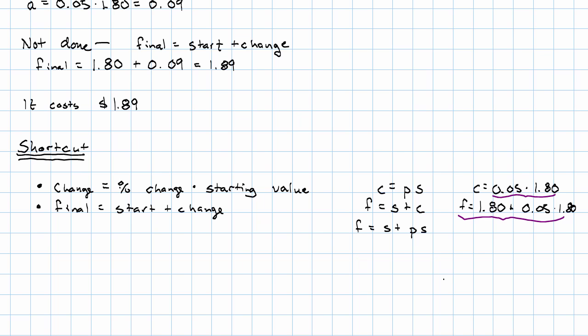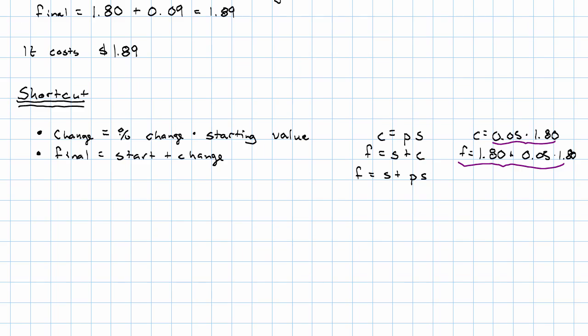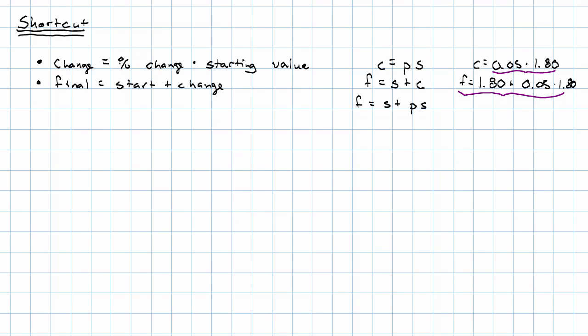So now I'm going to make a slightly weird move. I have final equals 1 times the starting value plus the percent change times the starting value. And now I'm going to use the distributive property backwards. Instead of multiplying and adding, I can instead add first and then multiply.